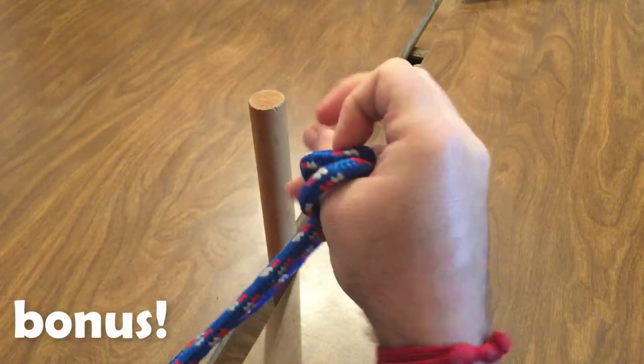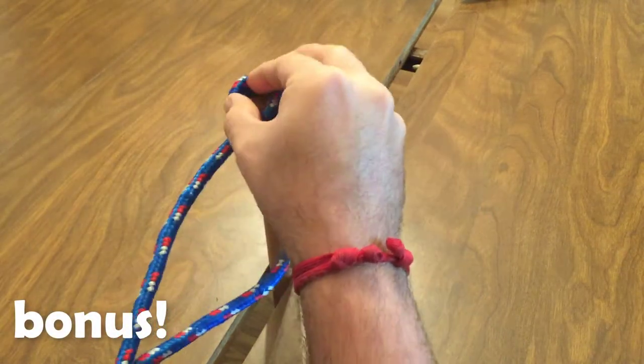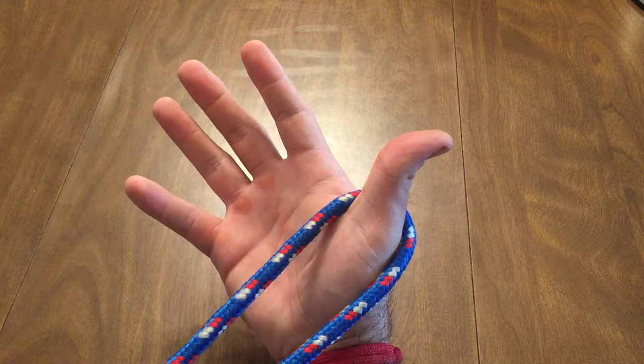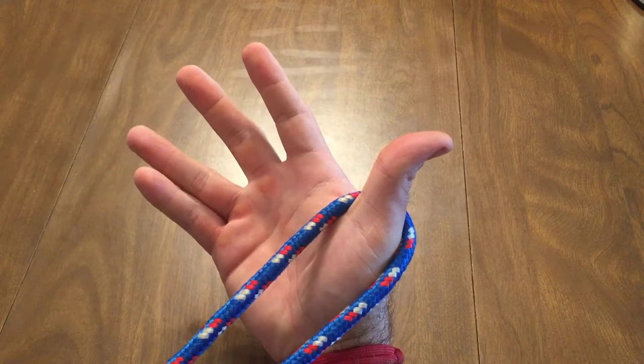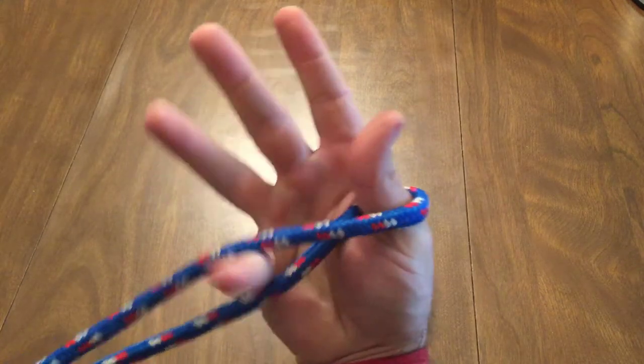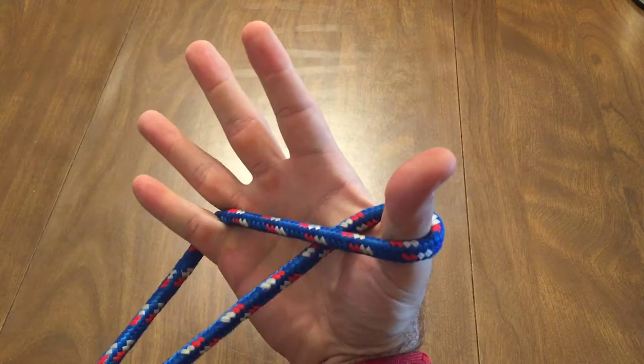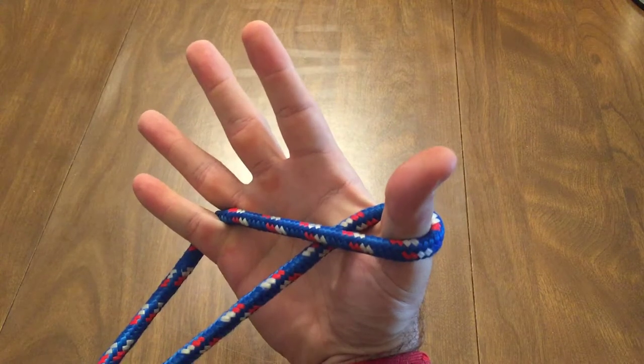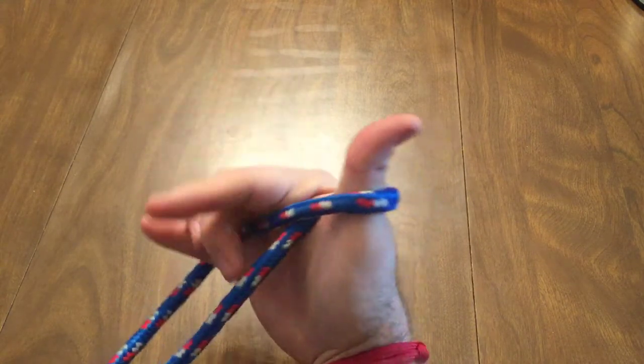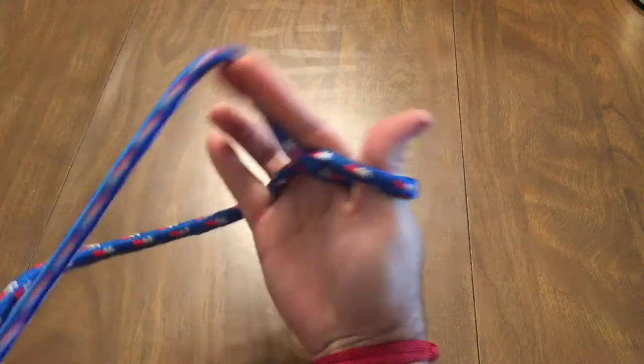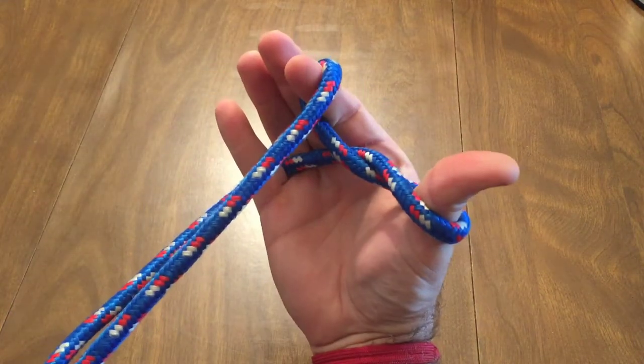Here's a bonus for you. With practice you can tie this knot in one hand. Start with the rope hanging from your thumb, reach down and across your hand with your pinky and pinch the rope between your pinky and ring finger. Then reach down with your index and middle fingers to grab the rope. Let the rope fall over your index finger and toward your thumb.